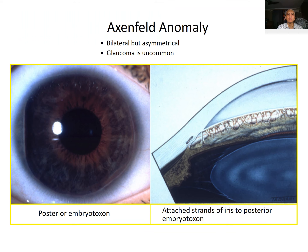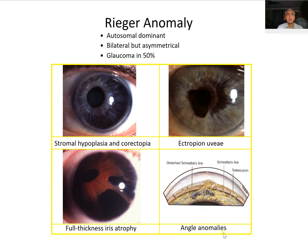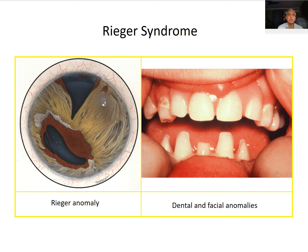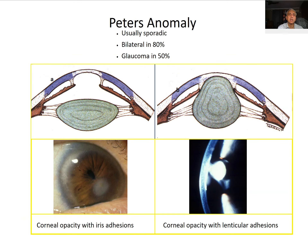Posterior embryotoxon is a more prominent posterior ending of the Descemet's membrane with attached strands. Axenfeld-Rieger anomaly is autosomal dominant, bilateral, and associated with glaucoma in 50% of patients. Features include stromal hypoplasia, corectopia, ectropion uvea — meaning the inner surface of the iris is exposed anteriorly — and full-thickness iris atrophy. This is a cleavage syndrome where the cornea and iris do not separate normally; when it is combined with dental and facial anomalies it is called Axenfeld-Rieger syndrome.